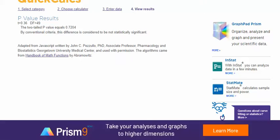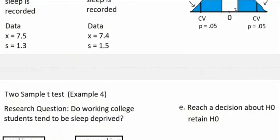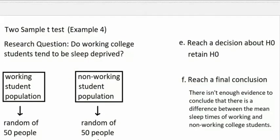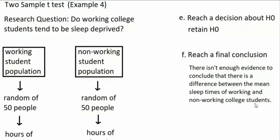Since p is above .05, we know the t-score is in the non-rejection region. Our decision will be to retain the null hypothesis — not reject it. Following from that, our conclusion is that there's not enough evidence to conclude that there's a difference between the mean sleep time of working students and the mean sleep time of non-working students.